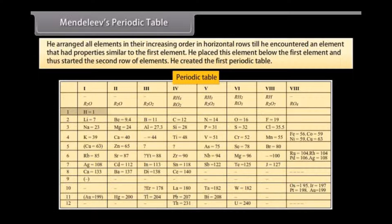Mendeleev arranged all elements in their increasing order in horizontal rows till he encountered an element that had properties similar to the first element. He placed this element below the first element and thus started the second row of elements. This helped him to arrange all the known elements according to their properties. He was thus able to create the first periodic table.